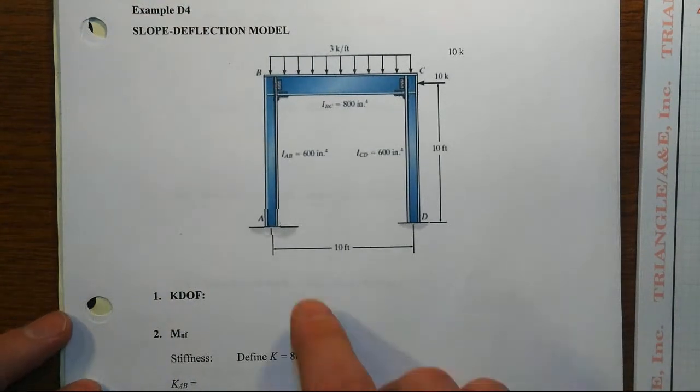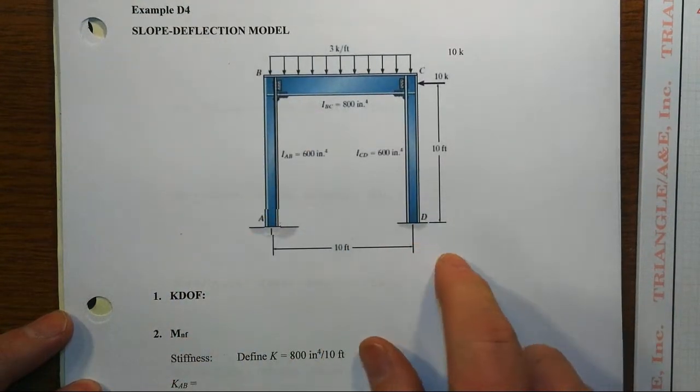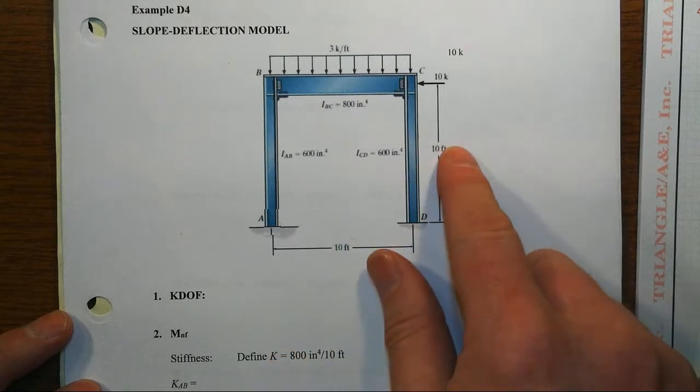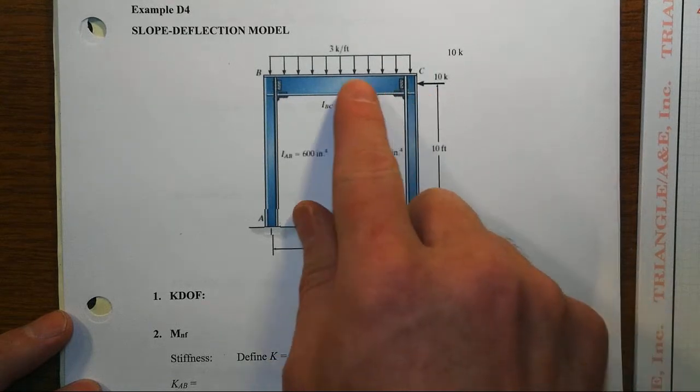In this example, we've got a single story, single bay portal frame that is 10 foot wide, 10 foot high, has a lateral load of 10 kips.